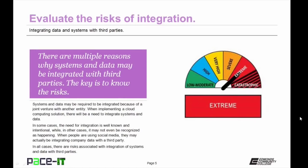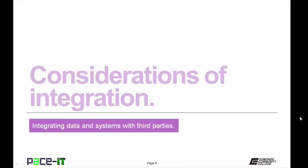There are multiple reasons why systems and data may be integrated with third parties; the real key is to know the risks associated with that integration. Systems and data may be required to be integrated because of a joint venture with another entity, or when implementing a cloud computing solution. In some cases the need for integration is well known and intentional, while in other cases it may not even be recognized — for example, when people use social media, they may actually be integrating company data with a third party. In all cases, there are risks associated with integration.